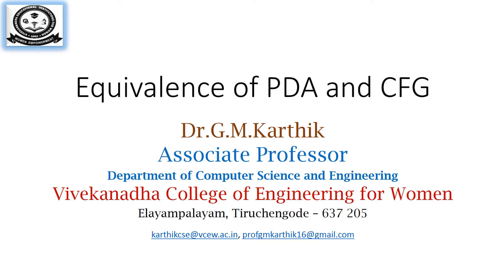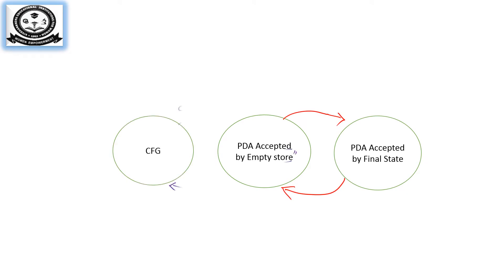Today's topic is about the equivalence of PDA and context-free grammar. We will see how a CFG is converted into an equivalent PDA. In the previous topic, we saw that PDA is accepted using an empty store, which is equivalent to the PDA accepted by the final state. Now we are going to find the equivalence between the CFG and PDA.